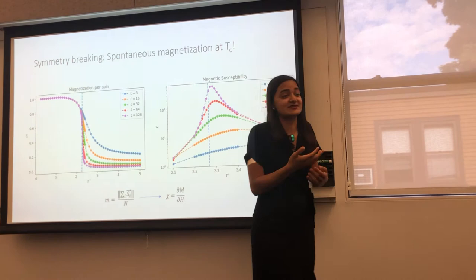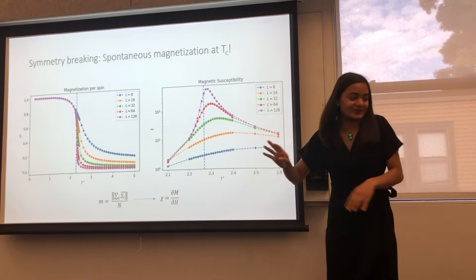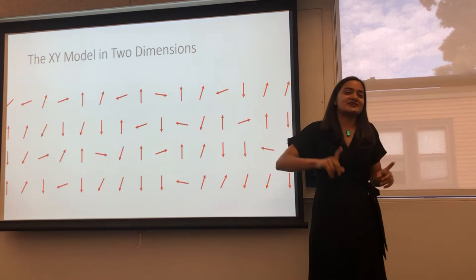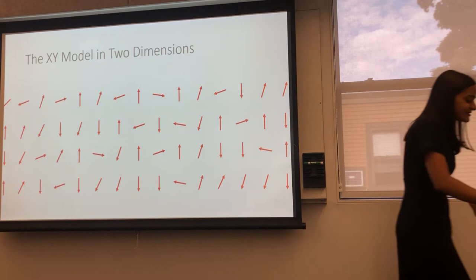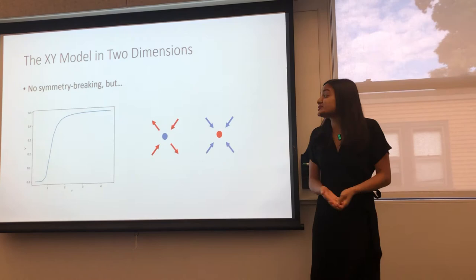Equivalently, there's a peak in the susceptibility, but that doesn't really matter too much. All right, so let's make our model slightly more fancy. Instead of allowing our spins to point up or down, let's let them rotate in the plane. This is called the XY model. And in this model, we don't see a symmetry breaking phase transition, but we do see what's called a topological phase transition. And this is characterized by the proliferation of vortex and anti-vortex pairs.